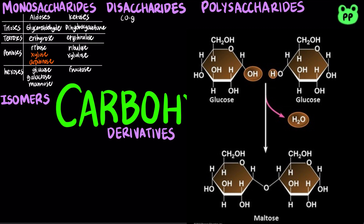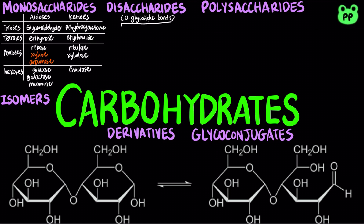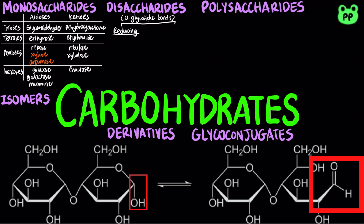A disaccharide is formed when a dehydration reaction joins two monosaccharides, forming a glycosidic linkage. Reducing sugars contain free anomeric carbons, derived from the ketone or aldehyde functional group in the open chain form, which are capable of being oxidized and cause the reduction of other substances.